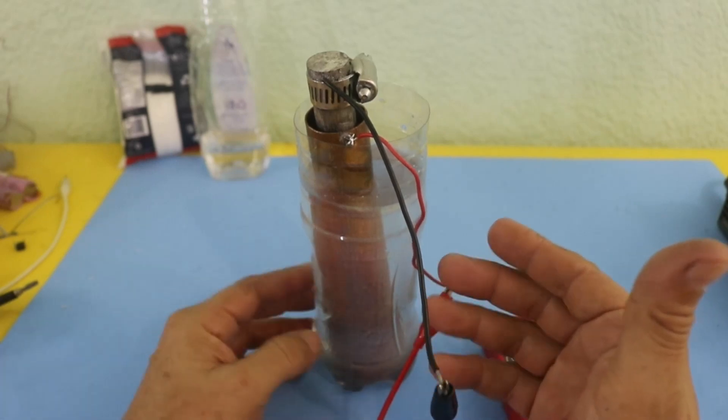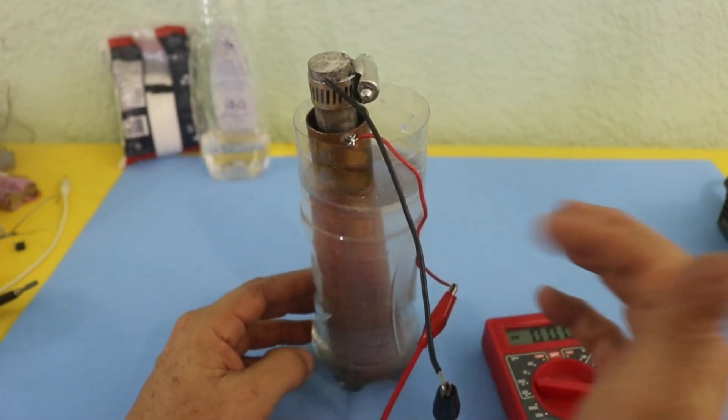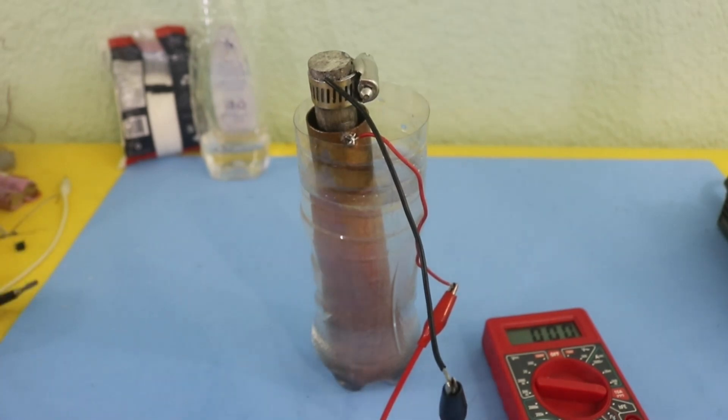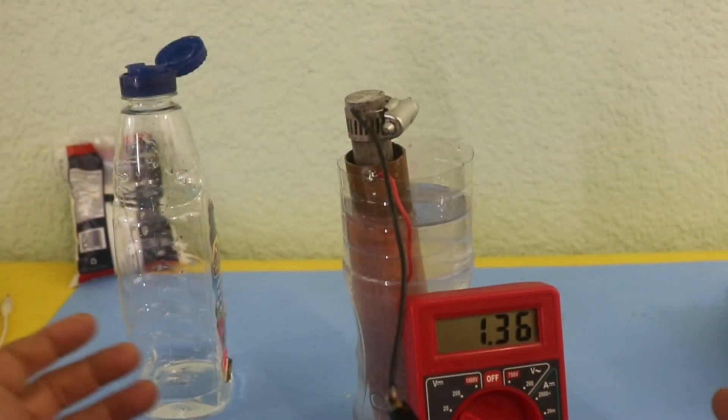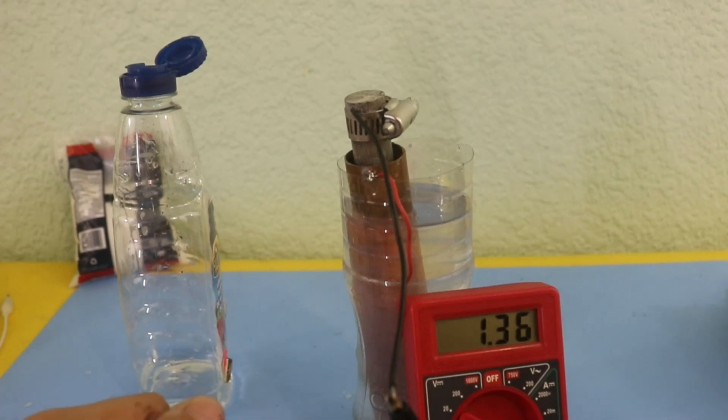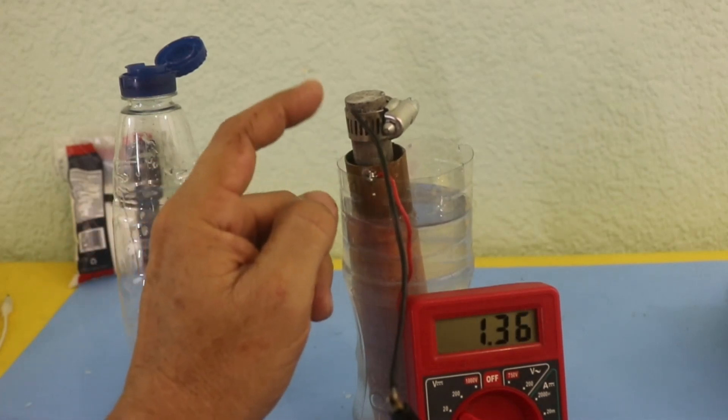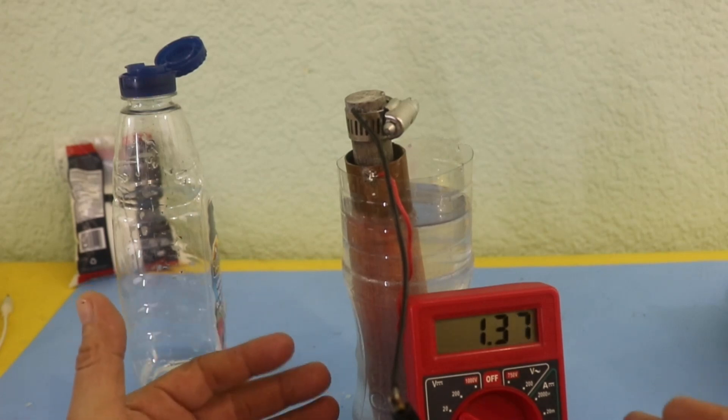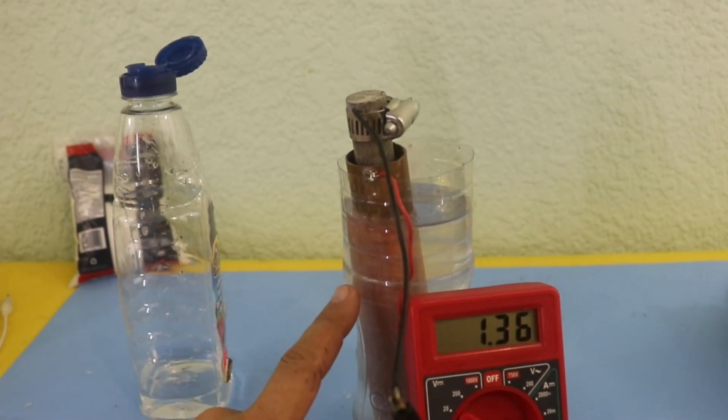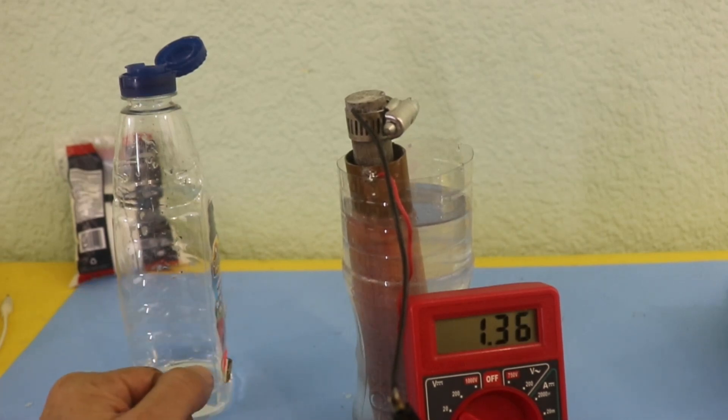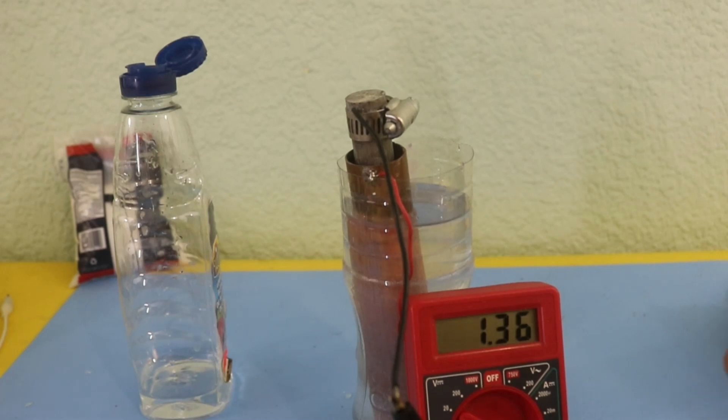Therefore we have a better performance using the vinegar electrolyte. The type of electrolyte is very important in the performance of a battery. As we see, we are using the same metals, copper and magnesium, but we have much better performance using the vinegar electrolyte instead of salt water electrolyte. So that's all for today.